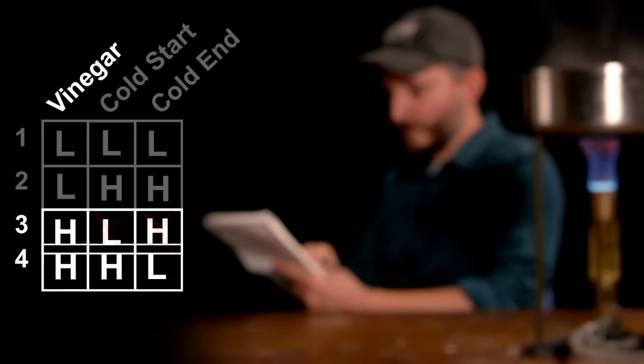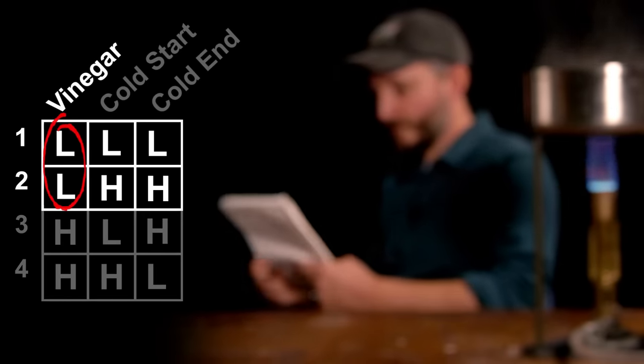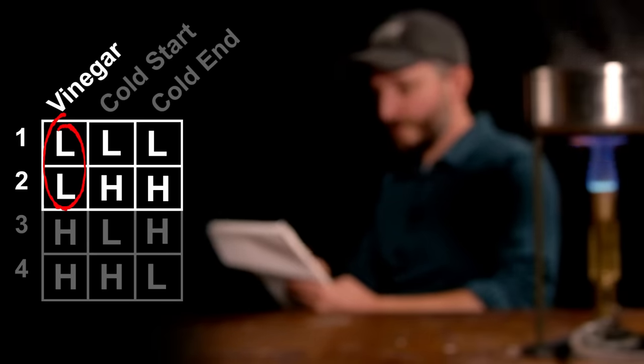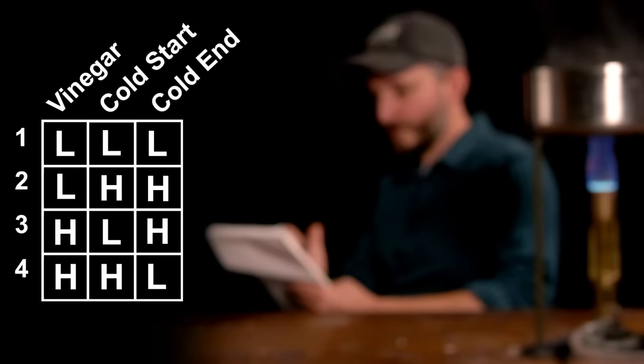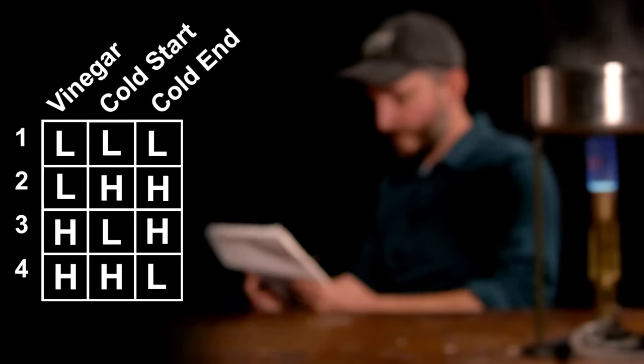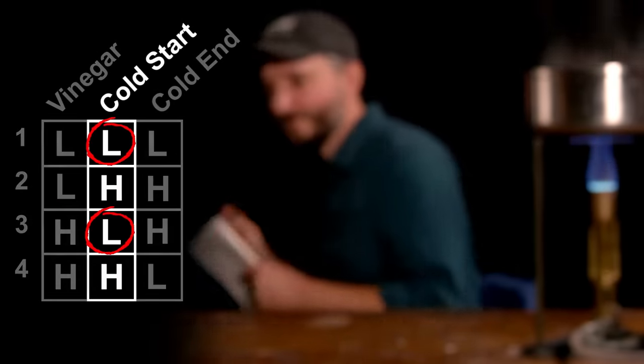The same is true in these two rows, where the level of vinegar is constant, the other changes cancel each other when the results are added together. It's as if we tested vinegar all by itself. This works for the other variables also. Where the middle column has a low value, the two rows added together cause the other changes to cancel out. How awesome is that?